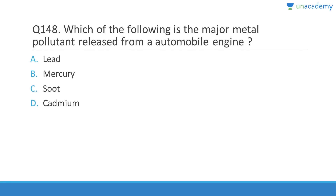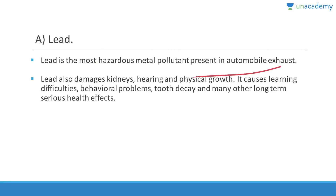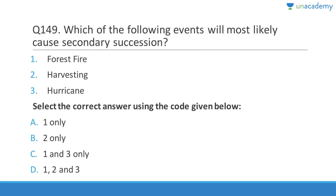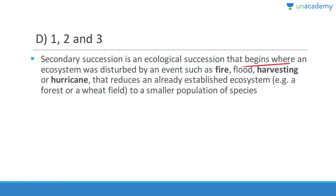The major metal pollutant released from an automobile engine is lead. Lead is the most dangerous and hazardous metal pollutant in automobile exhaust; catalytic converters and lead-free petroleum now reduce it. Lead damages kidneys and brain, especially hearing and physical growth, and causes learning difficulties, behavioral problems, and tooth decay. Excess lead is called plumbism. Secondary succession follows events like forest fire, harvesting, and hurricane that disturb an established ecosystem.